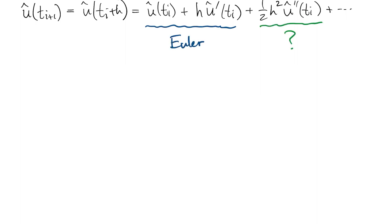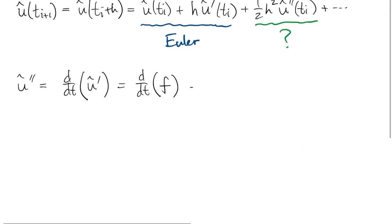If we want a higher order of accuracy, we have to do something to pick up the next term which has u-hat double prime in it. u-hat double prime is the time derivative of u-hat prime, which itself is just f by virtue of u-hat solving the ODE.